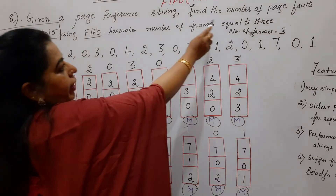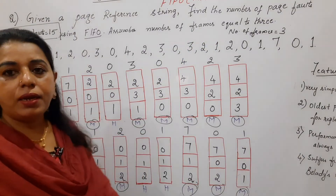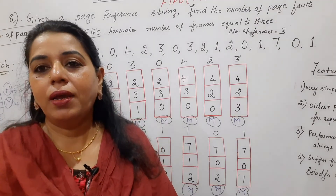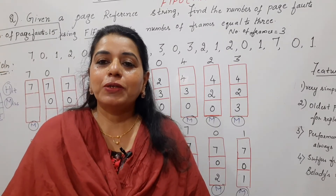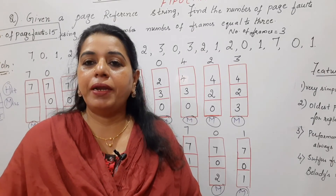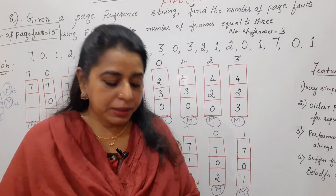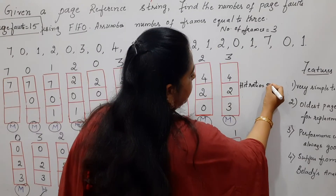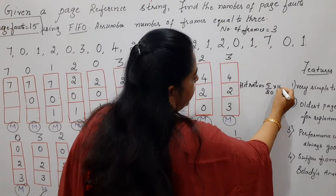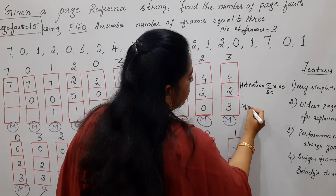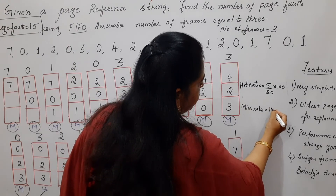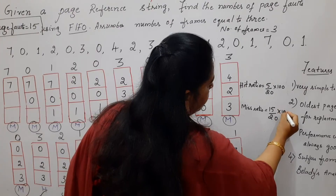This is what is asked in the question — find the number of page faults. You find it by counting the number of times the letter M is appearing. M indicates a miss, which means a page fault. This way you can easily calculate the number of page faults.